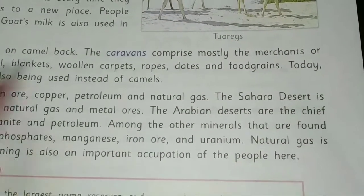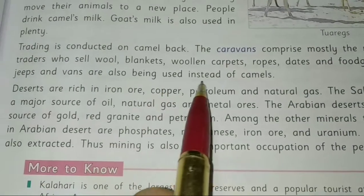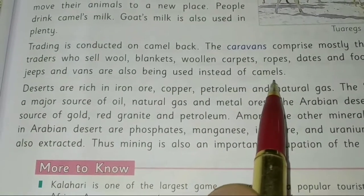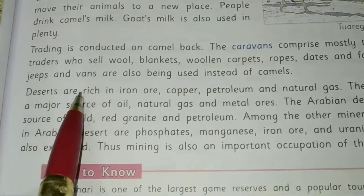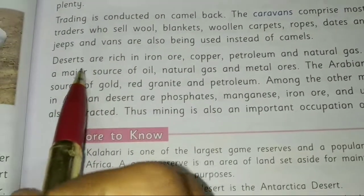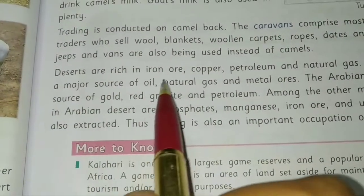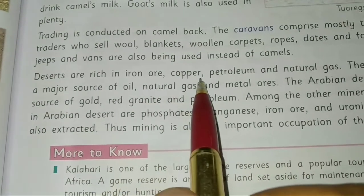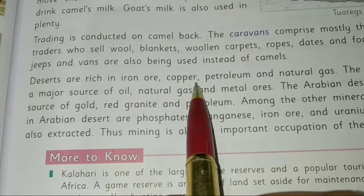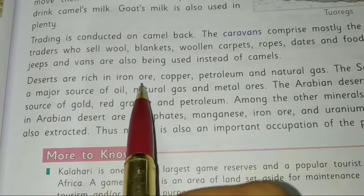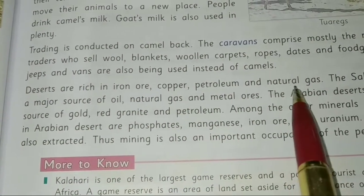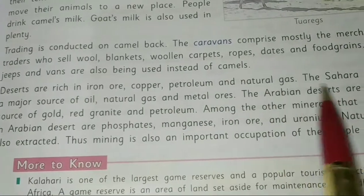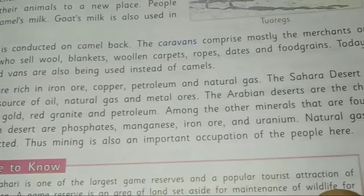Today, jeeps and vans are also used in place of camels for desert travel. Deserts are rich in iron ore, copper, petroleum, and natural gases.